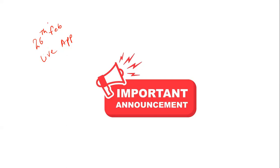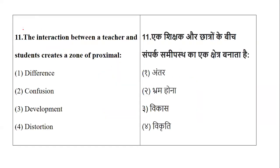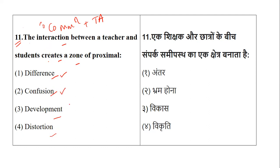Here comes the first question. This is question number 11 because we have already done 10 questions for this topic. Question number 11 says: the interaction between a teacher and a student creates a zone of proximal — what? The topic is taken from combining two units: Communication and Teaching Aptitude. The options are: differences, confusion, development, or distortion.